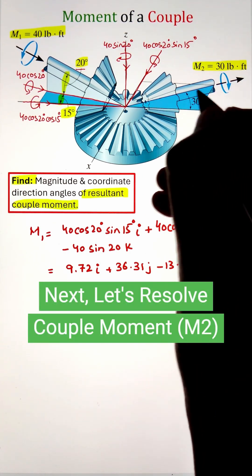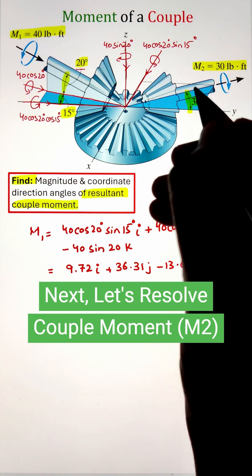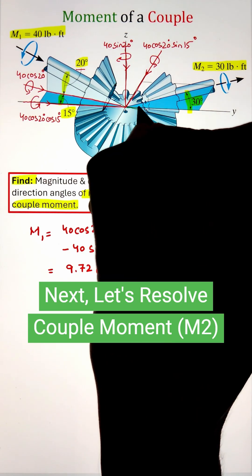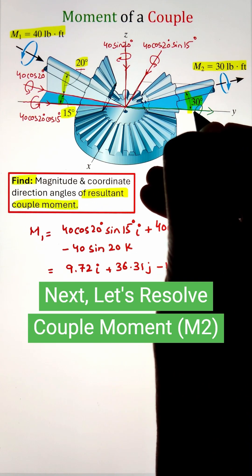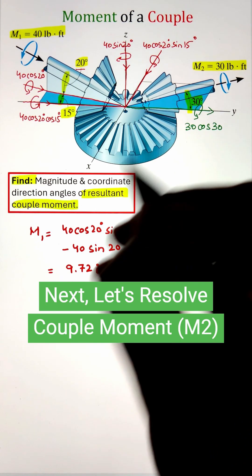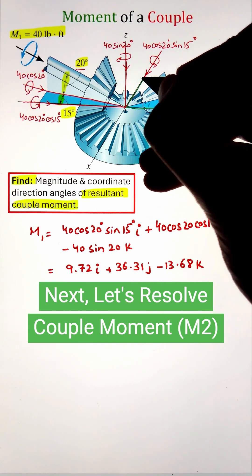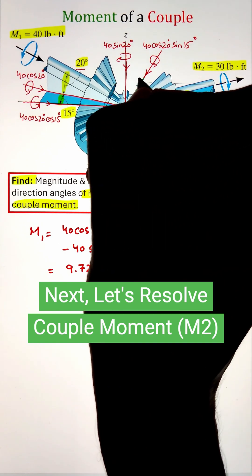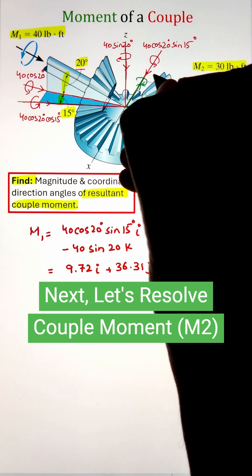Next, let's resolve our M2 moment. Here, the moment lies on the x-y plane and it is making an angle of 30 degrees with respect to the y-axis. So if we take the cos 30 function, it's going to project it along the y-axis, whereas the sine 30 function will project it along the x-axis pointing towards the negative direction.